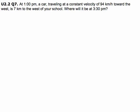At 1 p.m. in the afternoon, a car traveling at a constant velocity of 94 km an hour towards the west is 7 km west of your school. Where will it be at 3:30 in the afternoon?